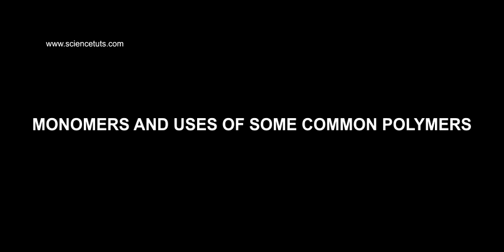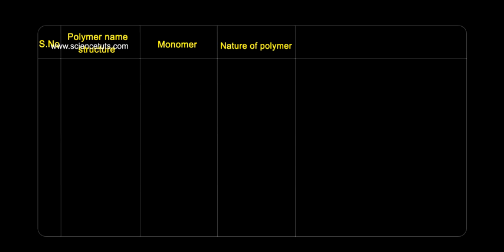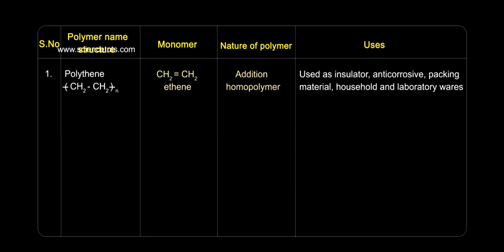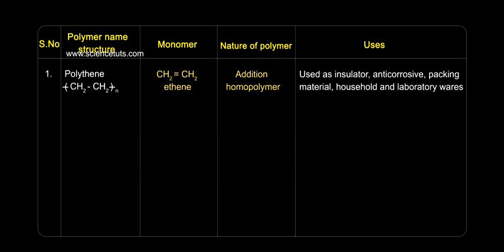Monomers and uses of some common polymers — polymer name, structure, and uses. Polythene: used as an insulator, anti-corrosive material, packing material, and for household and laboratory wares.